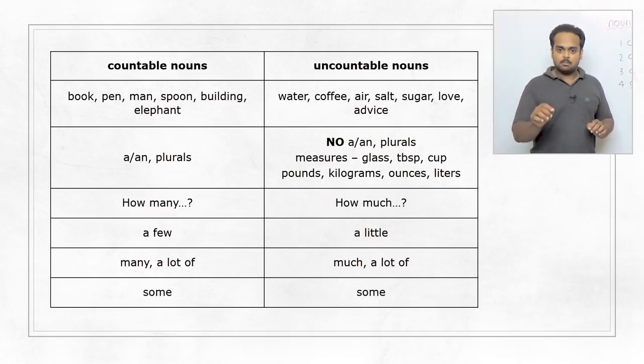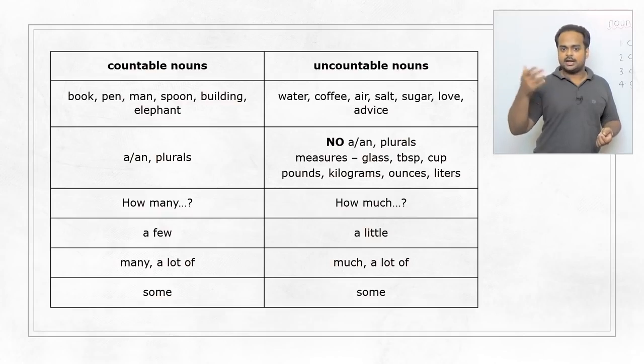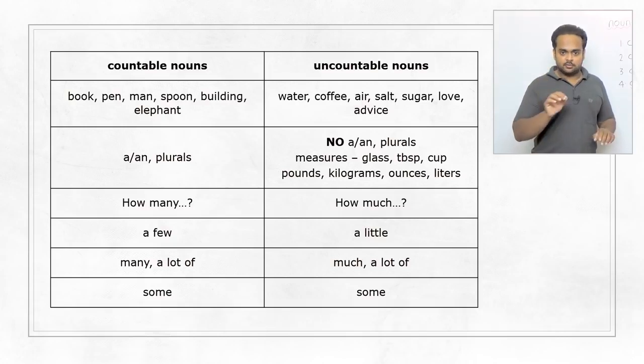So notice that a lot can be used both with countable and uncountable nouns. In the same way, the word some can also be used with both types. For example, some computers in my office don't work. That's some number but I don't want to say the number or I don't know the number. In the same way, we can say, there's some tea left in the glass. Some tea is some quantity but I don't know the quantity. So, with both countable and uncountable nouns, we can use a lot of and some.